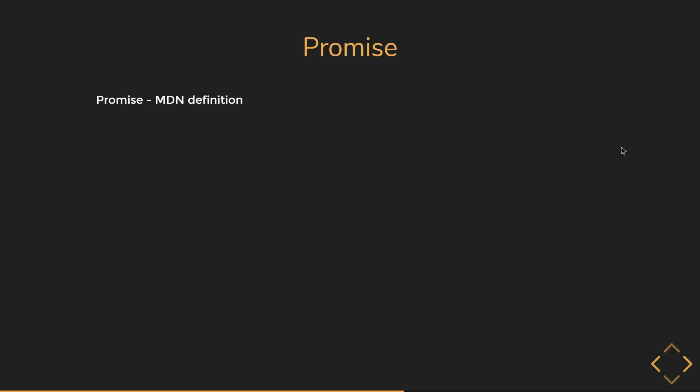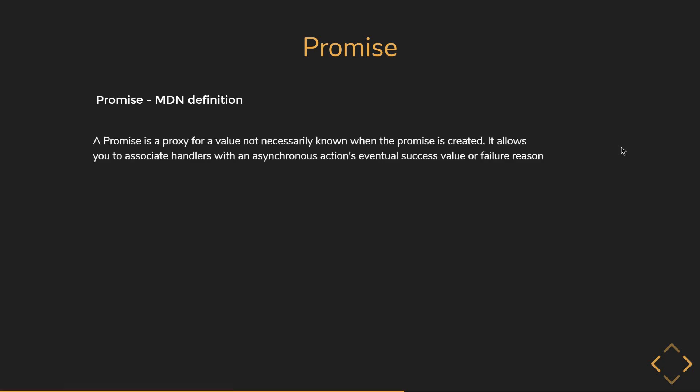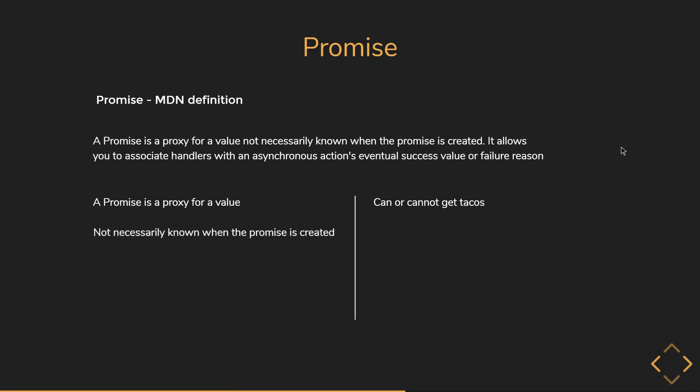That pretty much is a high-level overview of what a promise is in JavaScript. Let's read through the MDN definition: a promise is a proxy for a value not necessarily known when the promise is created. It allows you to associate handlers with an asynchronous action's eventual success value or failure reason. Going back to our example, your friend made a promise that he will let you know whether he can or cannot get tacos, which is the promise value.